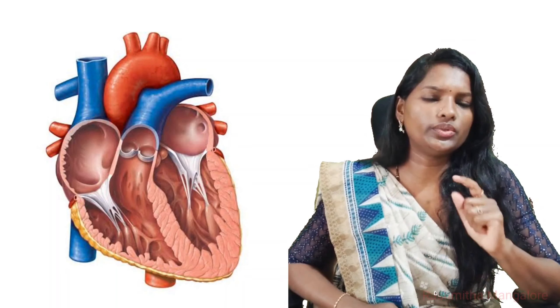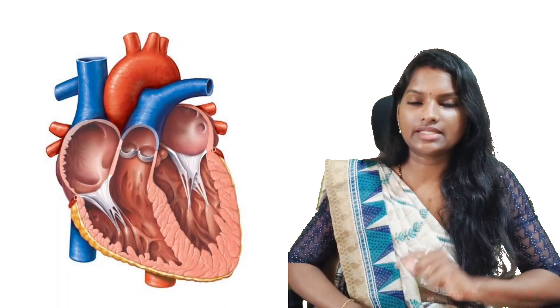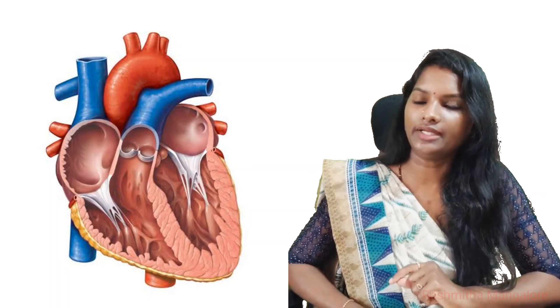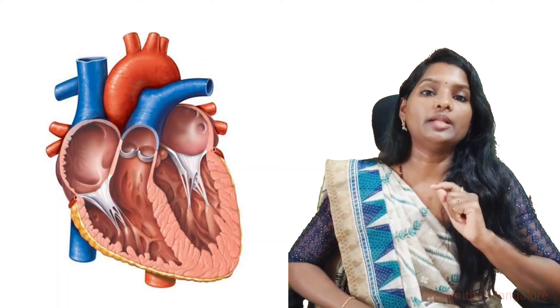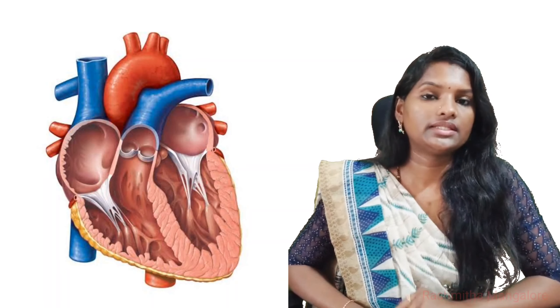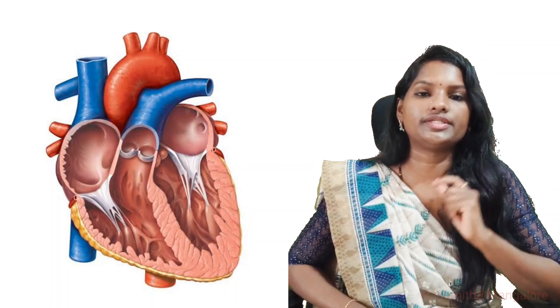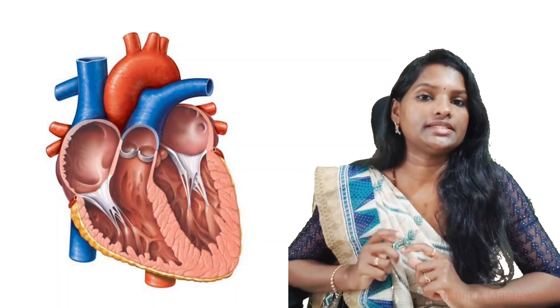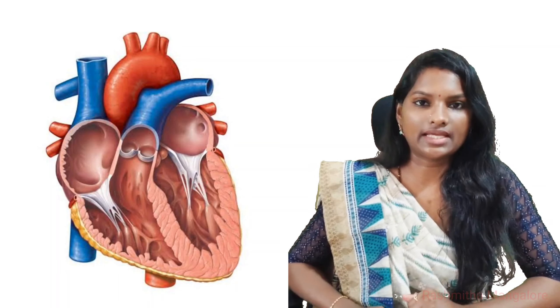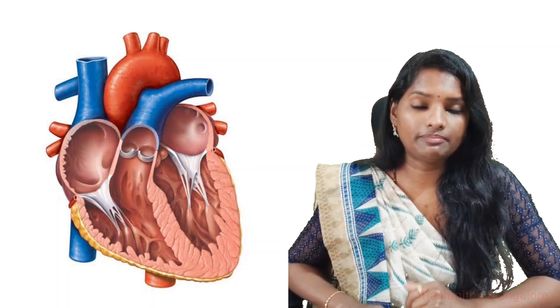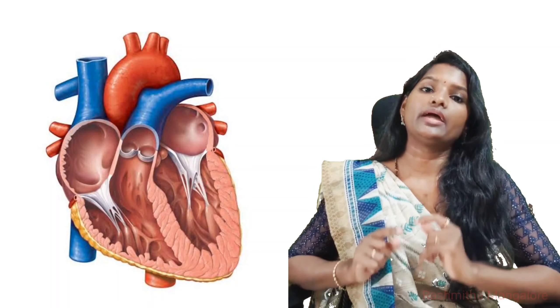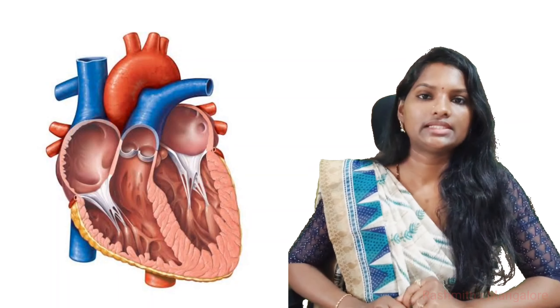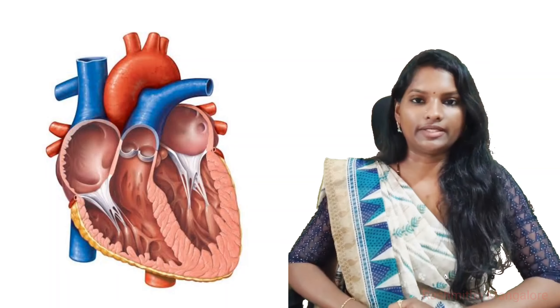An important point to remember: the pulmonary artery is the only artery that carries deoxygenated blood, and the pulmonary vein is the only vein that carries oxygenated blood. In the rest of the body, arteries carry oxygenated blood and veins carry deoxygenated blood.